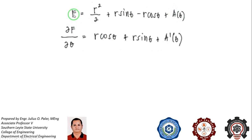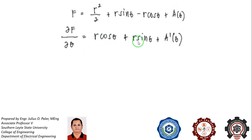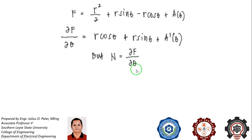Taking the partial derivative of f with respect to θ: r²/2 is constant so its derivative is zero, the derivative of r·sinθ is r·cosθ, and the derivative of negative r·cosθ is positive r·sinθ, plus a′(θ).